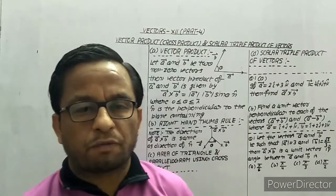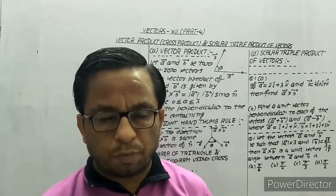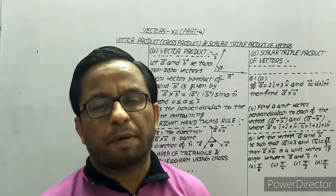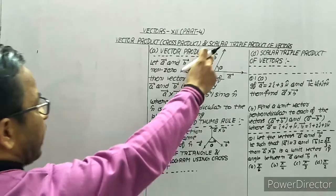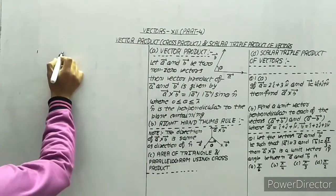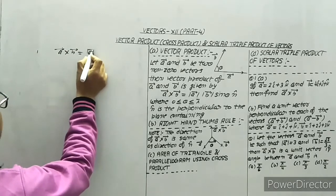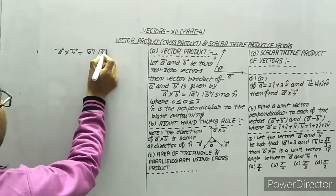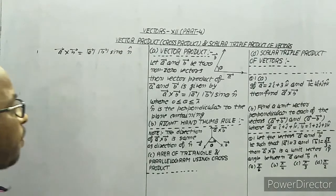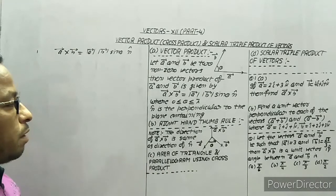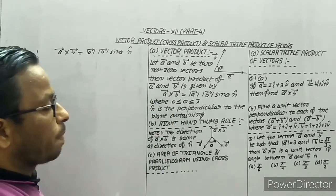Hello everyone. In this Part 4 of vectors, we are going to discuss vector or cross product and scalar triple product of vectors. Let a and b be two non-zero vectors. Then we have a cross b given by: magnitude of a times magnitude of b times sin(θ) times n-cap, where n-cap is a perpendicular vector to the plane containing them, and θ is between 0 and π.